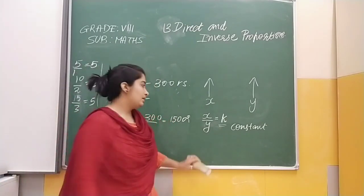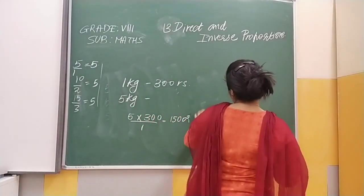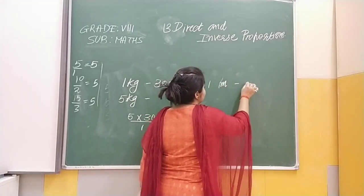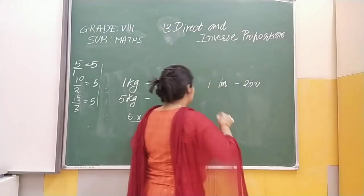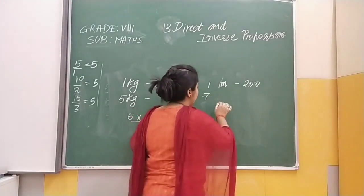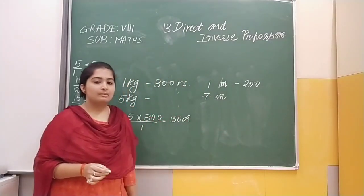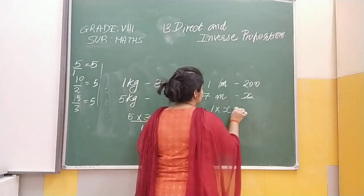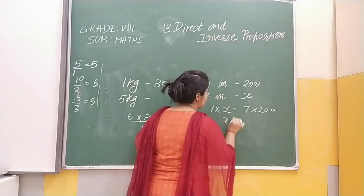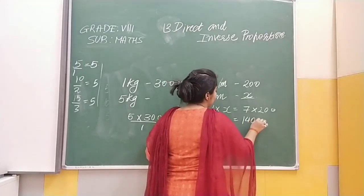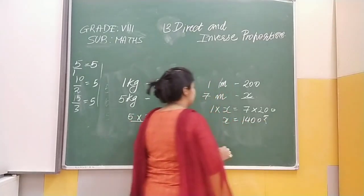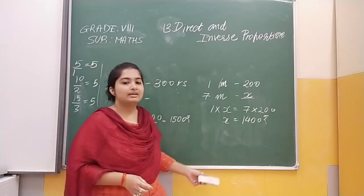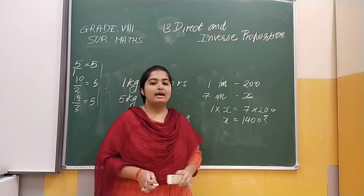Similarly, if we go to a garment shop, 1 meter material price is given as 200 rupees. Suppose we have to buy 7 meters of material. So we find x, where 1 into x is equal to 7 into 200. x is equal to 1,400 rupees. That is also an example of direct proportion.